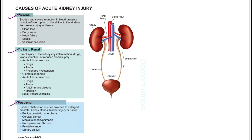Pre-renal means whenever something is decreasing the blood flow to the kidney — anything which is interrupting the renal artery, or any systemic disease, condition, or illness which is reducing the blood pressure to the kidneys. This includes interruption of blood flow due to blood loss, dehydration, heart failure, sepsis, or vascular occlusion.